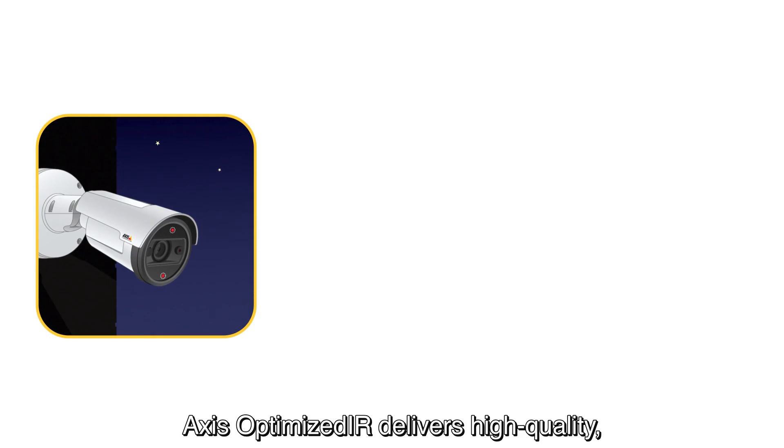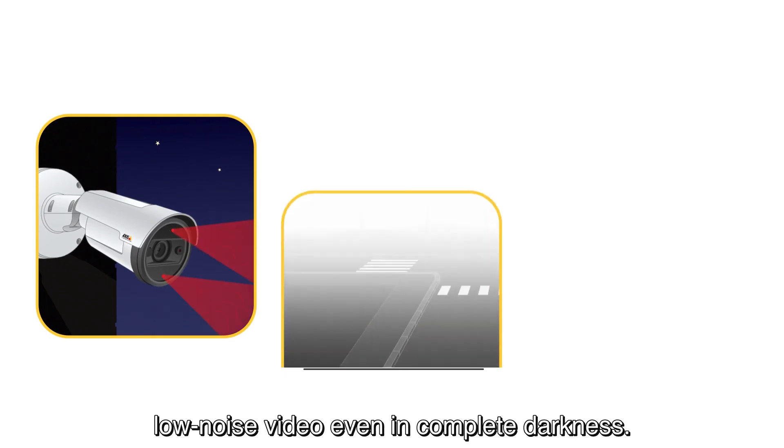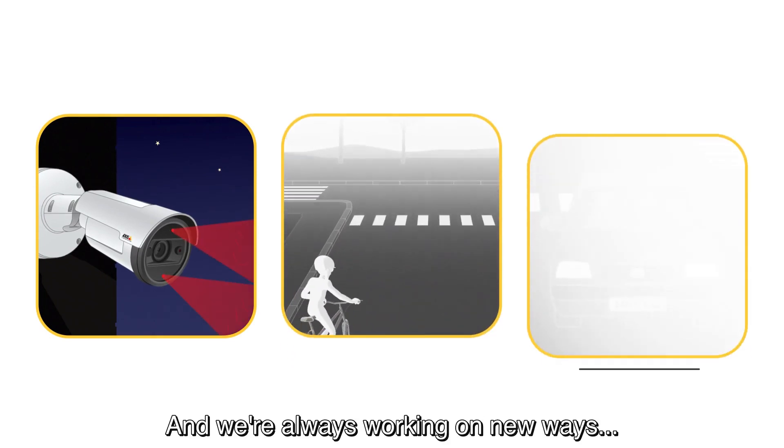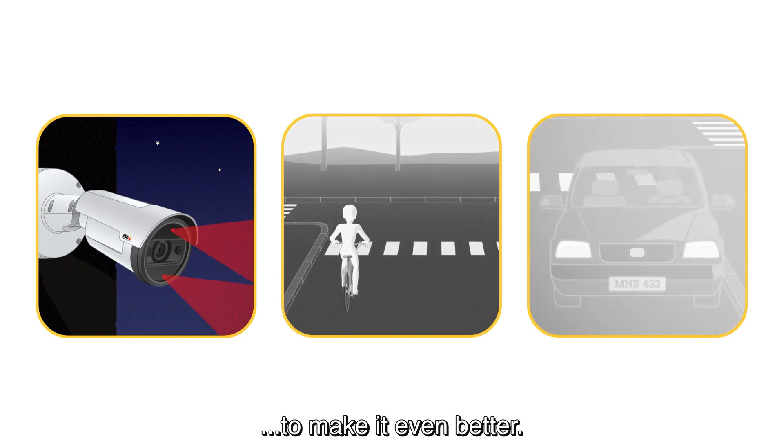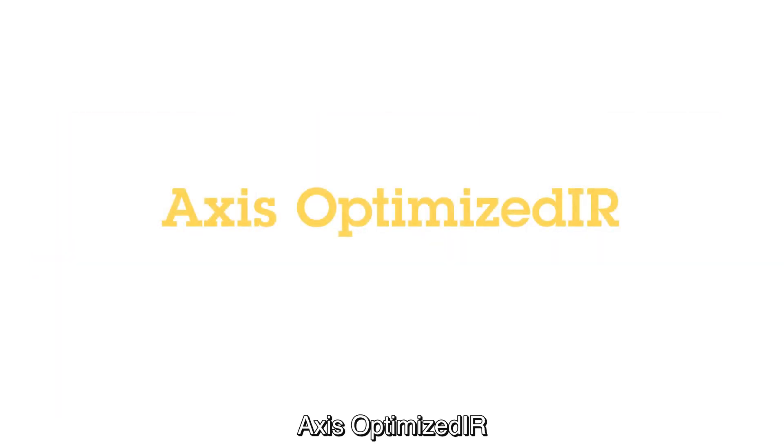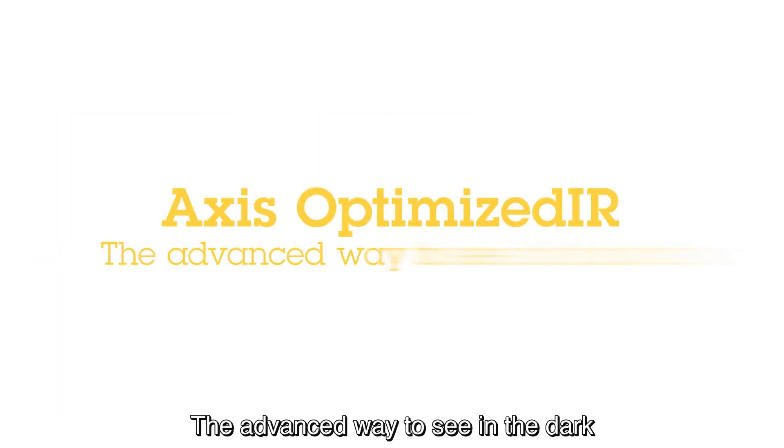Axis Optimized IR delivers high-quality, low-noise video even in complete darkness, and we're always working on new ways to make it even better. Axis Optimized IR. The advanced way to see in the dark.